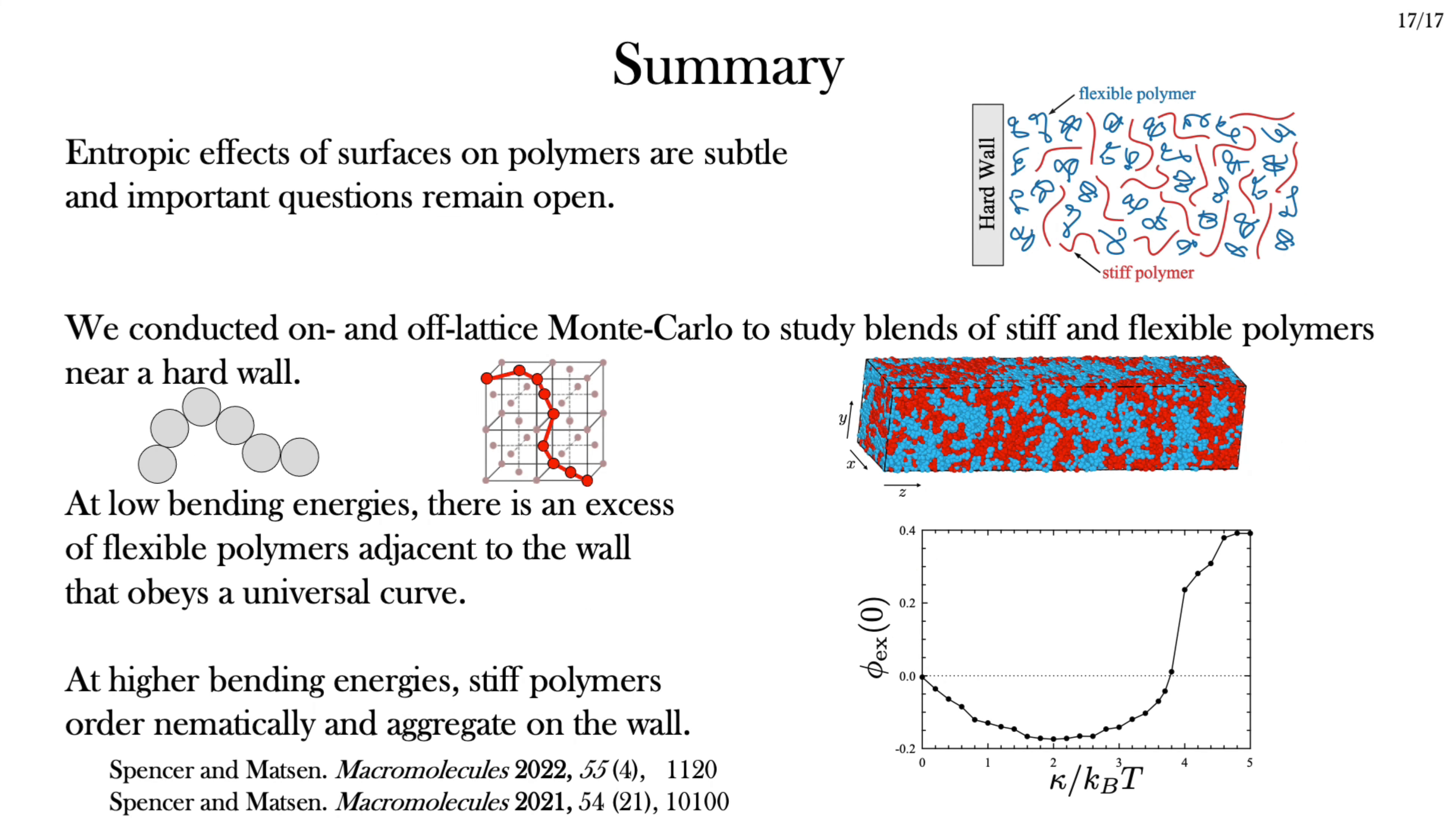Entropy has subtle but important effects on the behavior of polymers near surfaces, and questions remain open about how exactly entropic effects alter the behavior near these surfaces. To help address these questions, we've conducted off- and on-lattice Monte Carlo simulations of 50-50 polymer blends of stiff and flexible polymers near a surface. We found that at low bending energies, there's a preference for flexible polymers, which is well described by the prediction of Wu-Waddell. At higher bending energies, there's a surface ordering transition, and a preference for stiffer polymers kicks in. For a more thorough analysis, along with a description of how this work helps resolve some disagreements in the literature, I invite you to check out the two papers referenced in the slide. Thanks for listening.